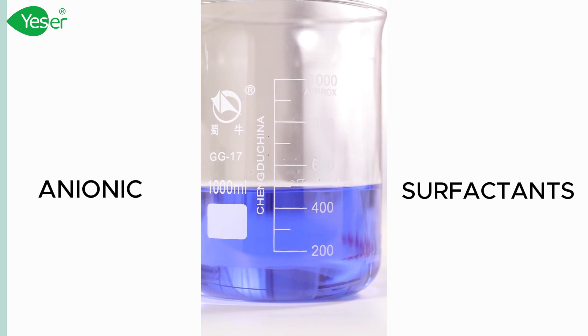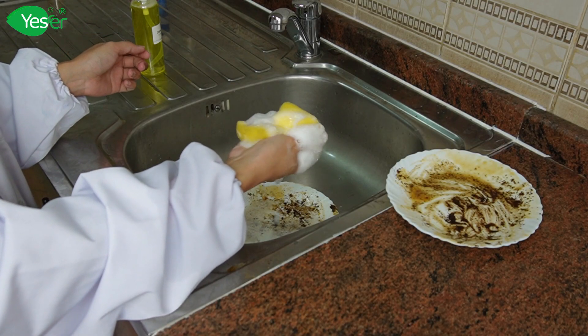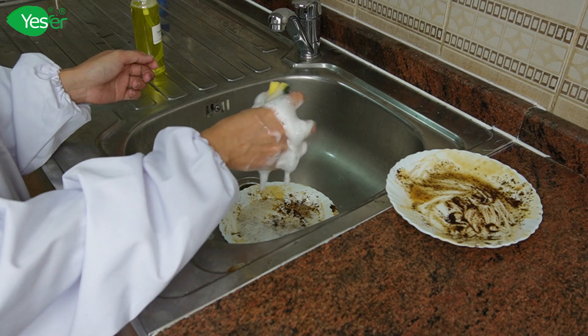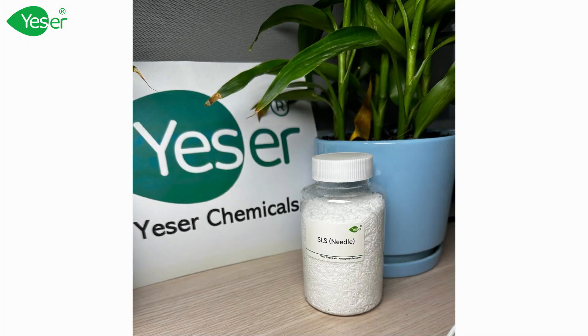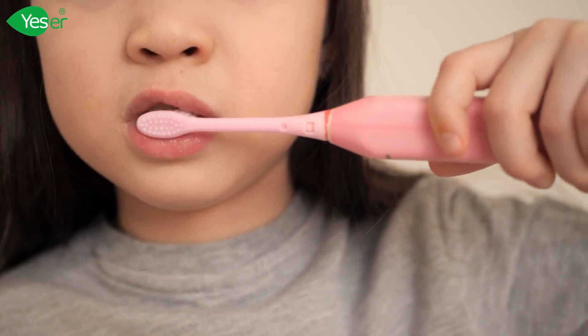Anionic surfactants have a negatively charged hydrophilic, or water-attracting, head. They are effective in removing dirt, grease, and oily stains, making them popular in laundry detergents and dishwashing liquids. They also tend to produce a lot of foam. An example is SLS, or sodium lauryl sulfate, which is commonly used in shampoos, body washes, and toothpaste.